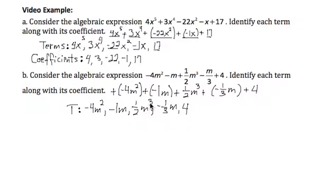This m third goes with the numerator, not with the denominator. So when we're writing our coefficients, I have negative 4 is the coefficient of negative 4m squared. Negative 1 is the coefficient of the negative m or negative 1m term. 1 half is the coefficient of 1 half m cubed.